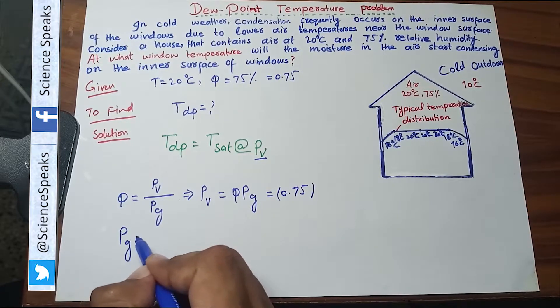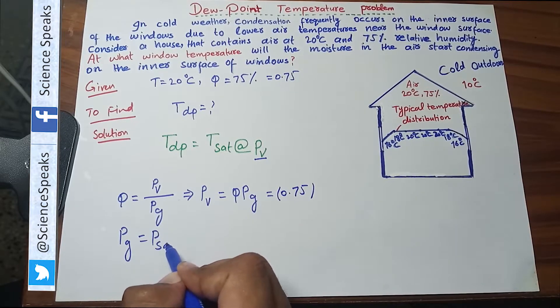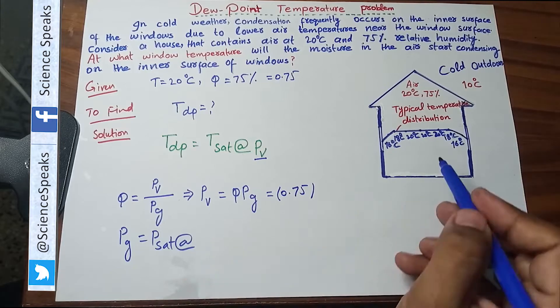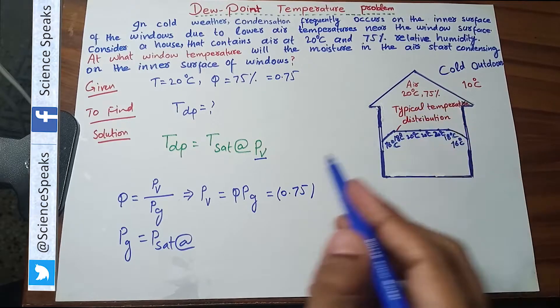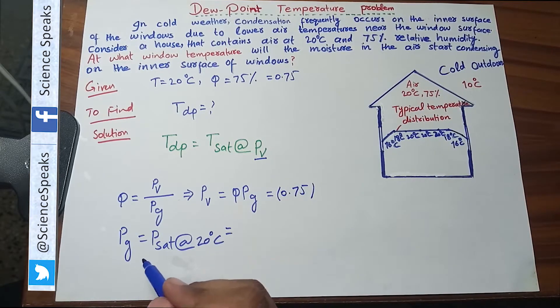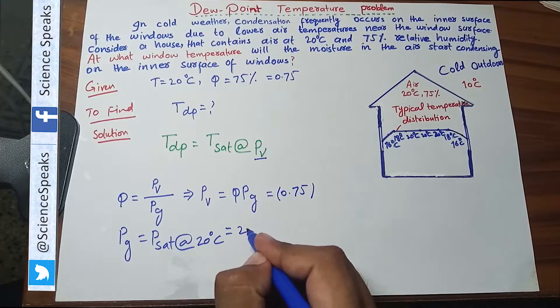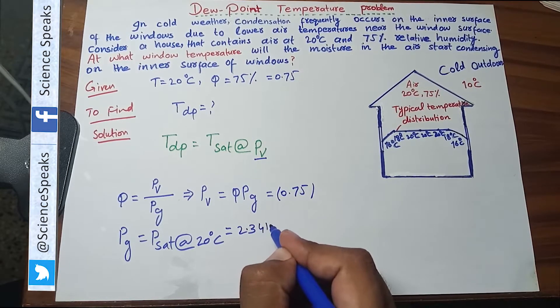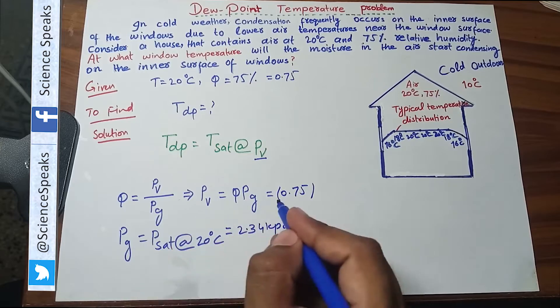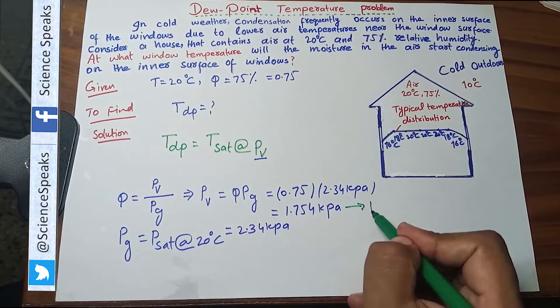PG is basically the saturation pressure at given temperature. Given temperature inside is 20 degree centigrade. PG value is 2.34 kilo Pascal. Put this value here. This is the value of the vapor pressure.